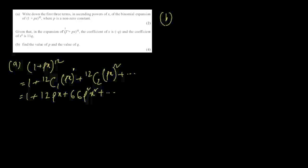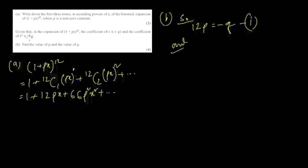In part (b): given that in the expansion of (1 + px)^12, the coefficient of x is −q. The coefficient of x is 12p, so equation 1 is: 12p = −q. The coefficient of x² is 11q, and that coefficient is 66p², so equation 2 is: 66p² = 11q. We solve this simultaneous equation.